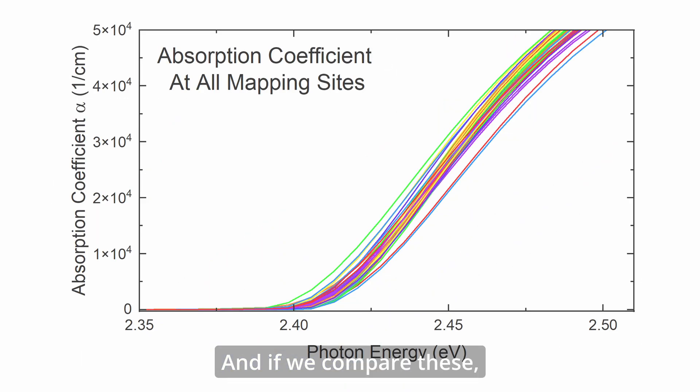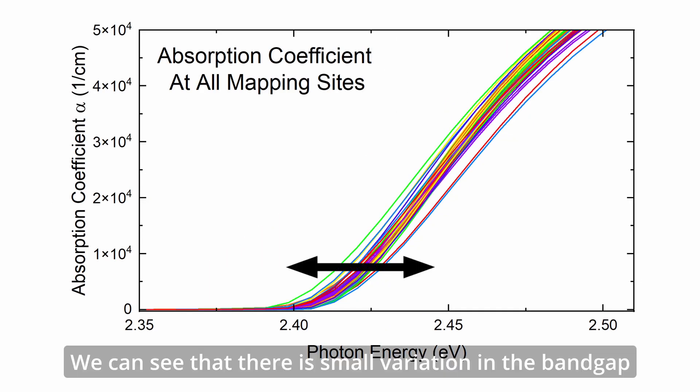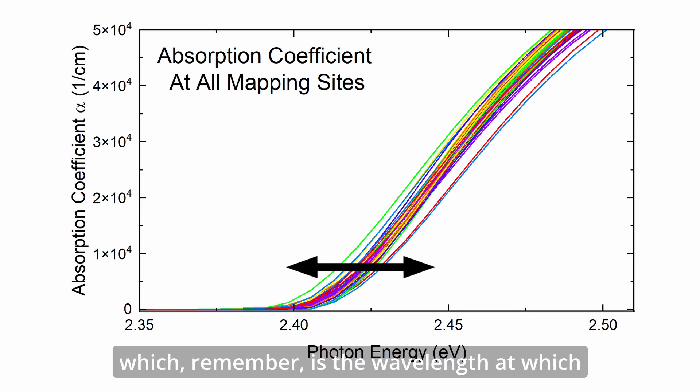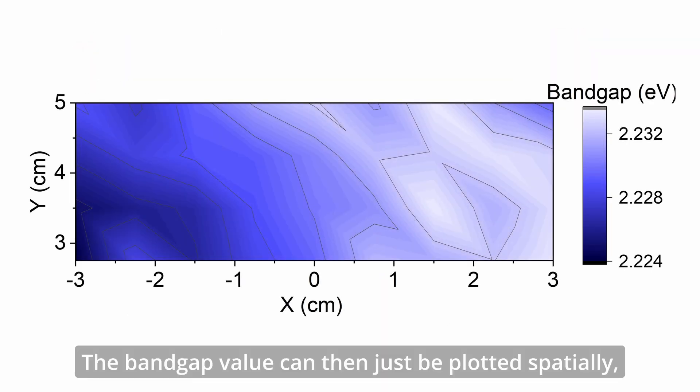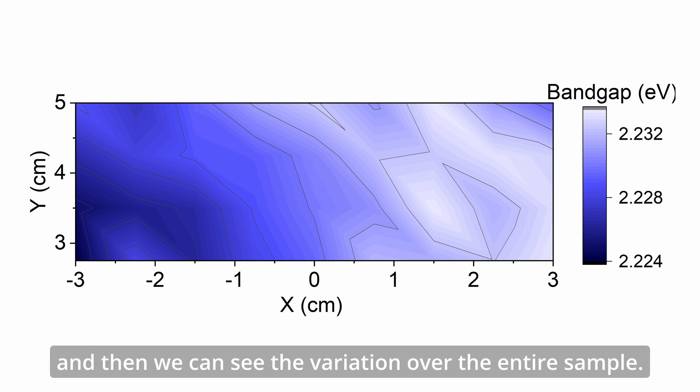And if we compare these, we can see that there's small variation in the band gap, which, remember, is the wavelength at which these lines basically go to zero. The band gap value can then just be plotted spatially, and then we can see the variation over the entire sample.